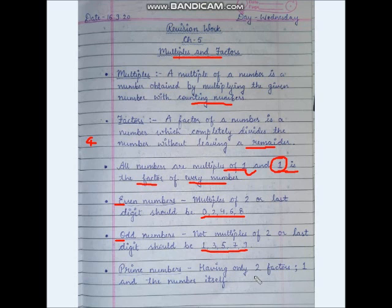Prime numbers are numbers having only 2 factors — 1 and the number itself. A prime number will either divide by 1 or by itself. So those numbers are called prime numbers.